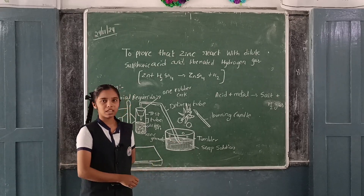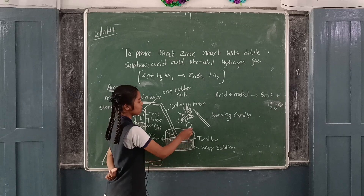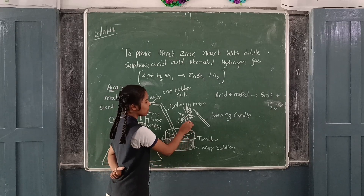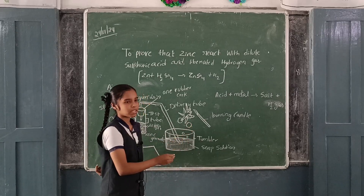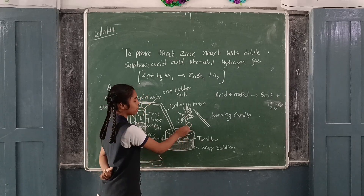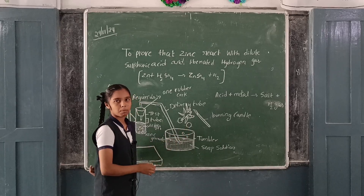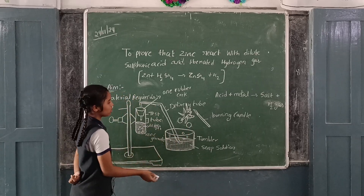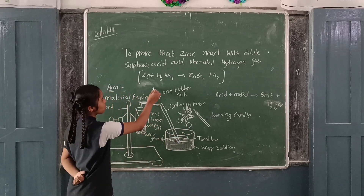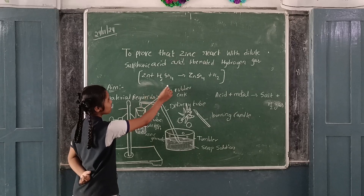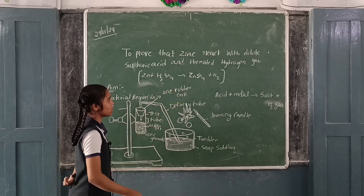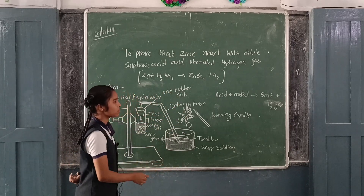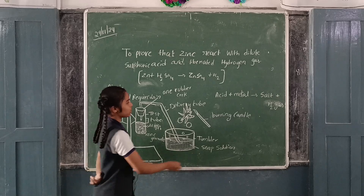Take a burning candle near to the soap bubbles. The gas present in the soap bubbles burns, making a pop sound. The chemical equation is: Zn + H₂SO₄ → ZnSO₄ + H₂. That means acid plus metal gives salt plus hydrogen gas.